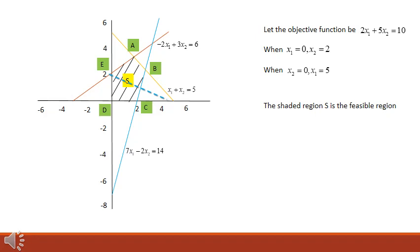Consider the first constraint: minus 2x₁ plus 3x₂ is less than or equal to 6. Putting x₁ equals 0 and x₂ equals 0 gives 0 on the left-hand side, which is less than 6, so the inequality is satisfied. The valid side is towards the origin. The valid sides of constraints 1 and 2 also include negative values of x₁ and x₂, but the non-negativity constraints require x₁ and x₂ to be greater than or equal to 0. Keeping this in view, the feasible region is the shaded region S, and A, B, C, D, E are the corner points.